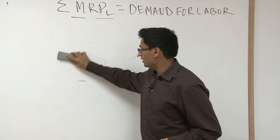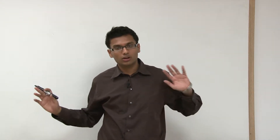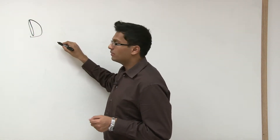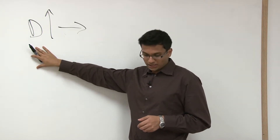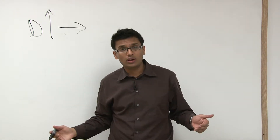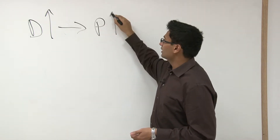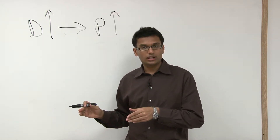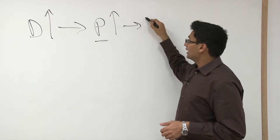Let's use M&Ms as an example. Say the entire world loves M&Ms and all other candy goes away — demand for M&Ms skyrockets. When demand goes up, the makers of M&Ms can charge more. So the price of the product goes up. Remember that price is one of the factors in MRPL, so the amount of money they make goes up, meaning MRPL goes up.